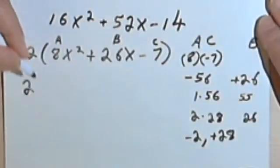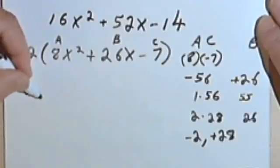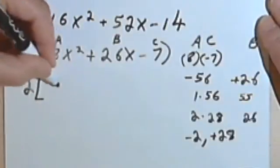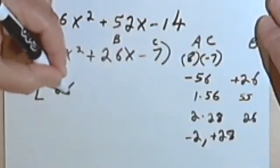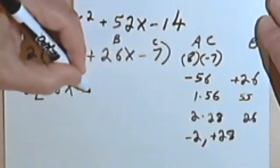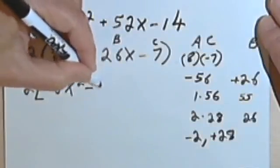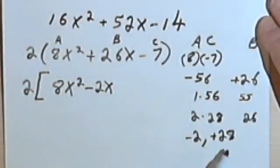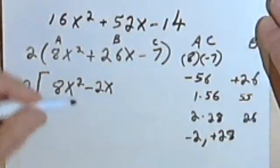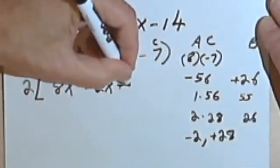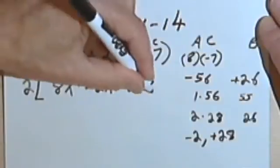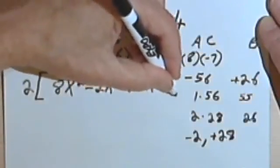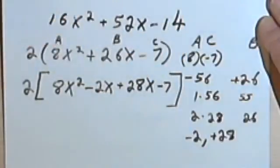So that's going to give me 2 times... I'm going to go to square brackets because I'm going to need them... 2 times 8x squared minus 2x. When you've got a choice, by the way, always start with the number that has a negative sign. Again, minus 2x plus 28x minus 7.